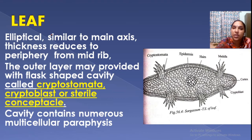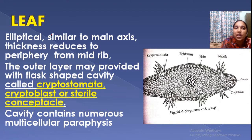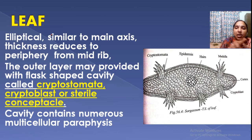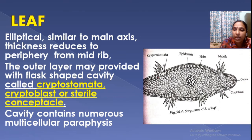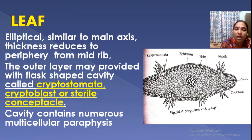Somewhat the same structure is also observed in the leaf. When you cut a cross-section of the leaf and observe under a microscope, you can see similar parts. The leaf shape is elliptical. The outer layer is provided with cells called stomata — specifically, these are cryptostomata — small gaps or holes that open to the outside.